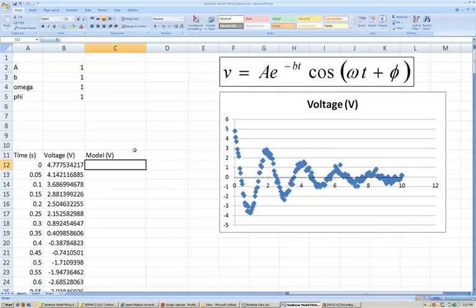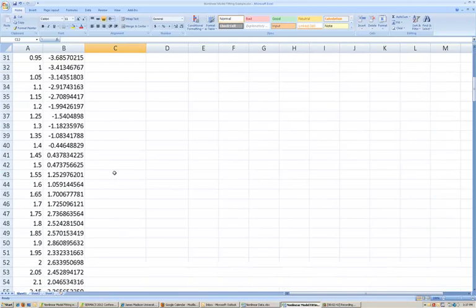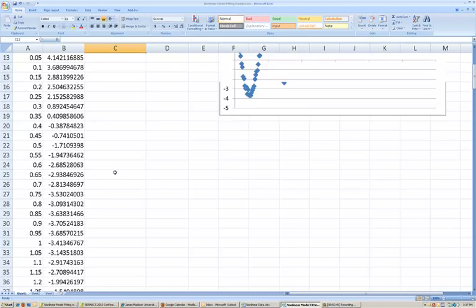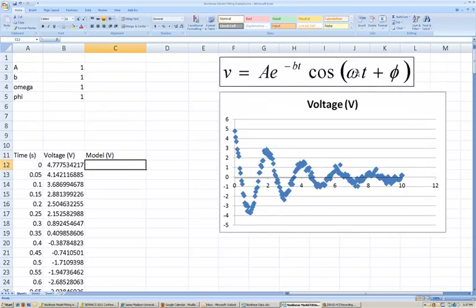Alright, and now, for all of the rows of data that I have, what I'm going to do is I'm going to calculate this model based on the parameters that I established here and the certain instance in time at which that measurement or that model should predict the voltage output.